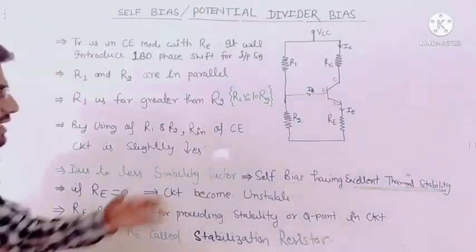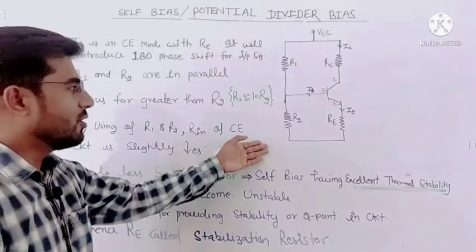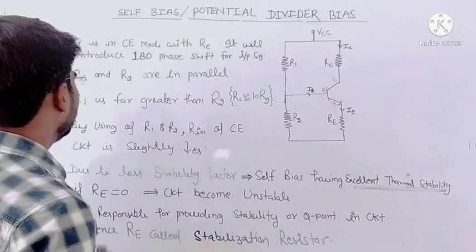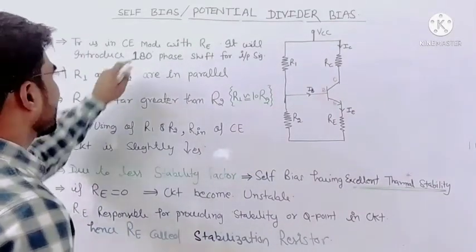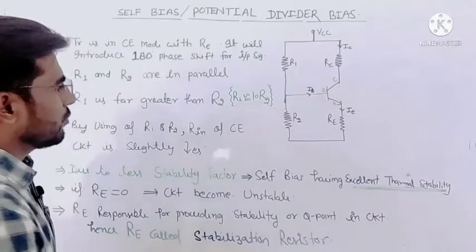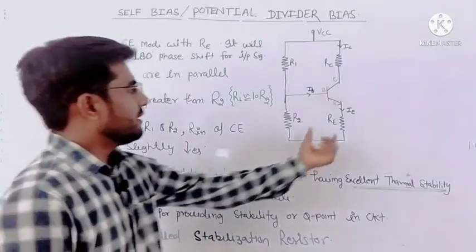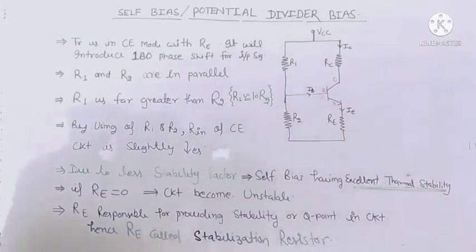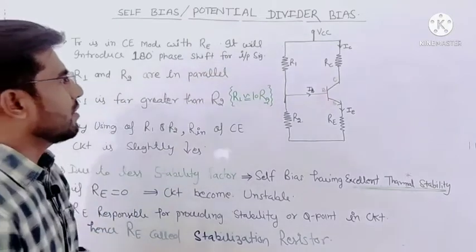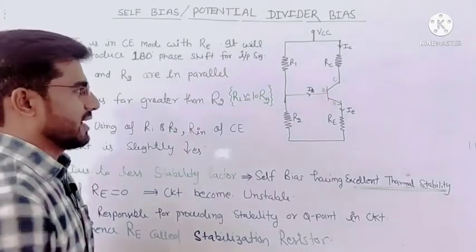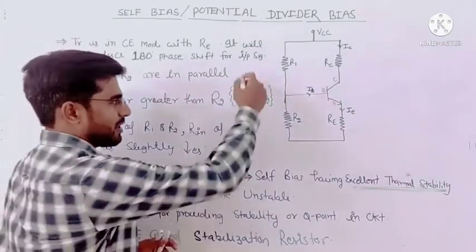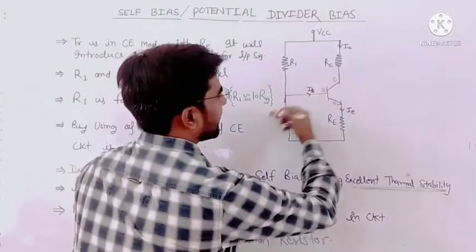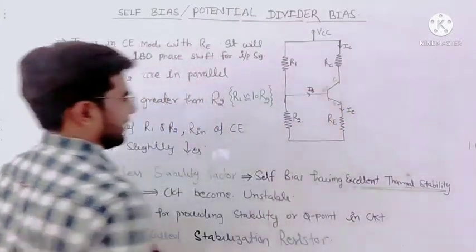One important point about the voltage divider: first, the transistor is in common emitter mode with RE. It will introduce a 180 degree phase shift for the input signal. If we give this input signal, then the output will have a 180 degree phase shift.